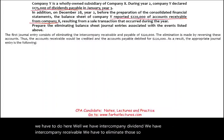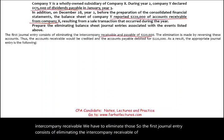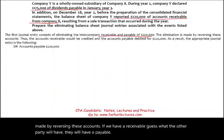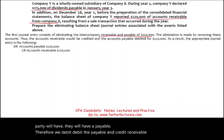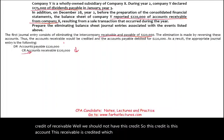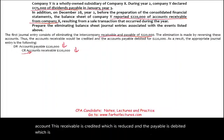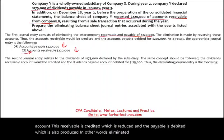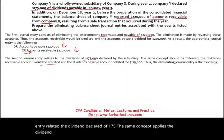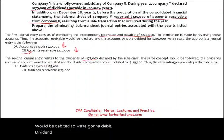The first journal entry eliminates the intercompany receivable of $220,000 by reversing the accounts. Since Y has a receivable, X will have a payable. We debit the accounts payable and credit the accounts receivable — both are reduced, i.e., eliminated. The second journal entry relates to the dividend declared of $175,000 — the same concept applies: debit dividend payable and credit dividend receivable to eliminate both.